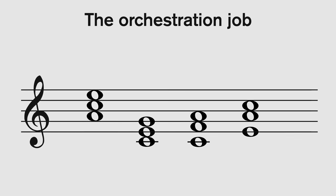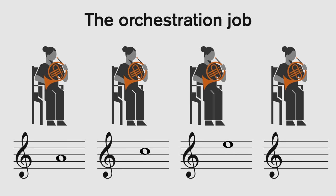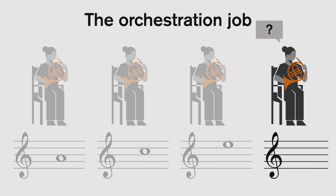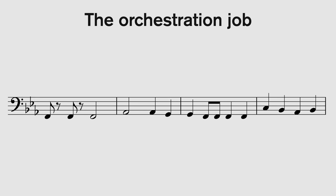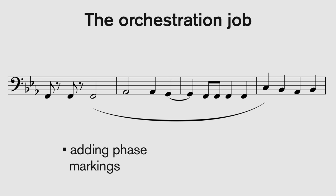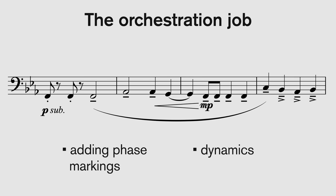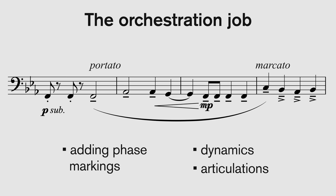Much of the orchestration job is making many small decisions and problem-solving for the composer. For example, a composer may write a three-note chord for four French horns — so what do you do with the fourth horn? Do you have it sit out on the chord, double an existing note, or play a new note entirely? Another example is adding phrase markings, dynamics, and articulations to a score — that information is not explicitly implied in a composer's mock-up.